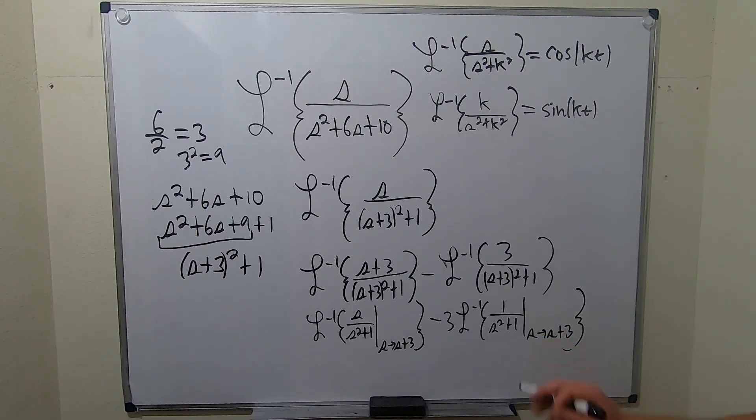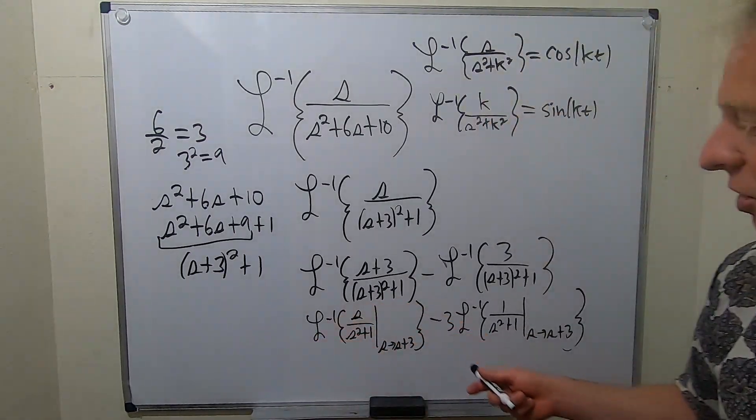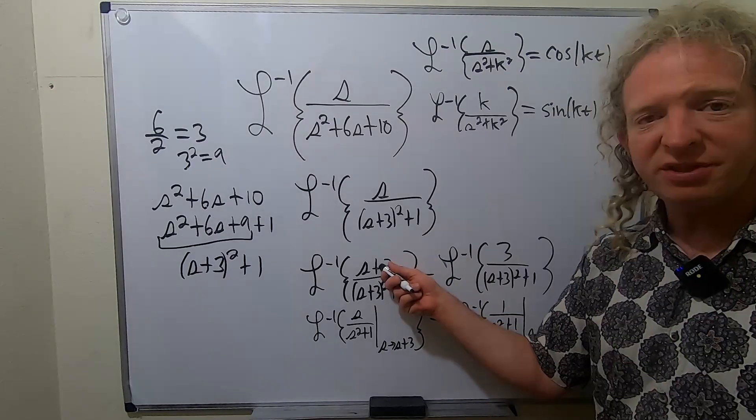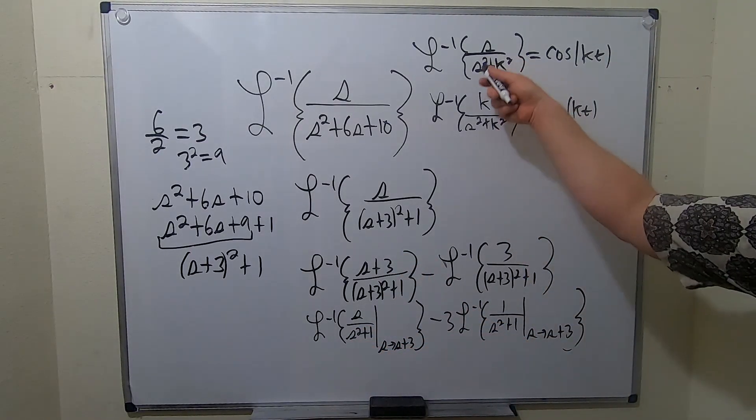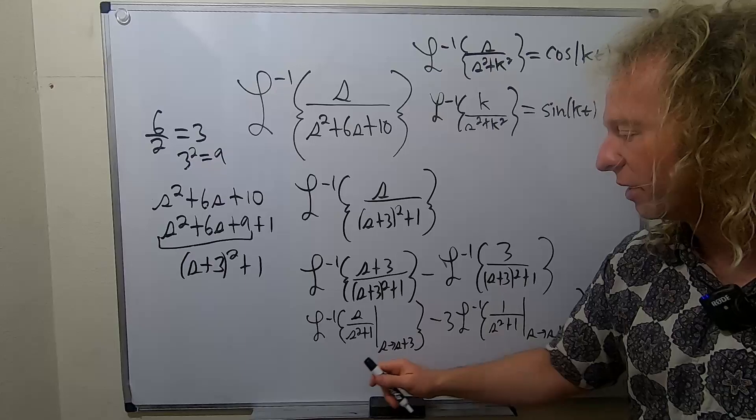So pros do it. It's beautiful. So when we perform the shift, we basically force these to become s's. So now we can apply the formula. You see in both cases, k is equal to 1.